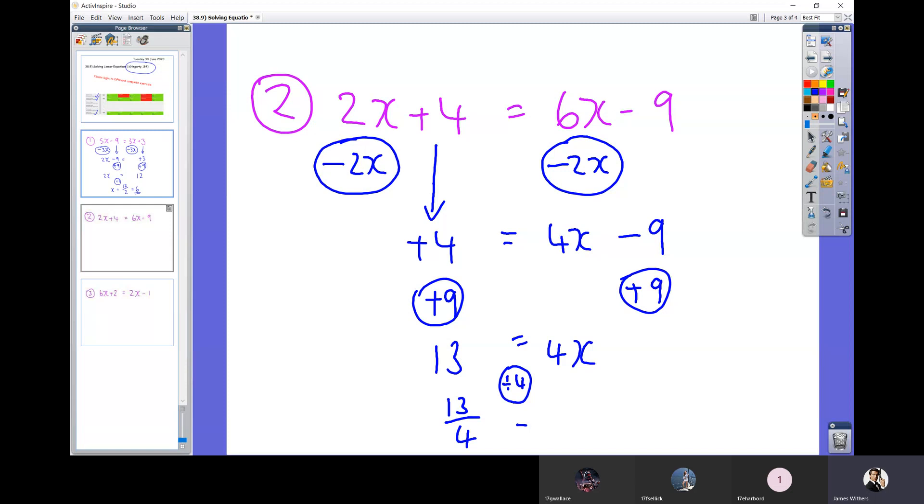So our final answer is going to be 13 being divided by 4 equals x, and that's as far as we can go on this occasion. 13 divided by 4 is not a whole number. Now I'm 99% sure that Hegarty will allow you to just give the top-heavy fraction of 13 over 4. If it doesn't, you might just have to get your calculator out and turn that into a mixed number with a decimal, but I'm sure it's going to allow 13 over 4. It normally does.